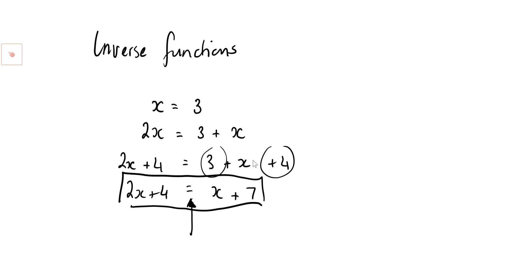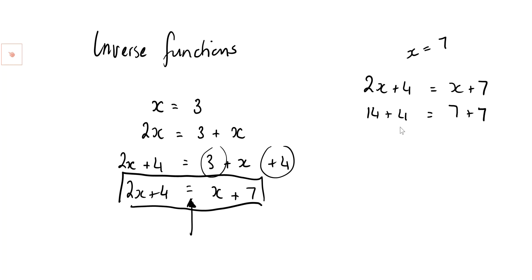I can take this as an equation but stick any value in. If x is 7: 14 plus 4 equals 7 plus 7, which gives 18 equals 14 — but that symbol is now untrue, it's not equal. So when we solve, we are finding x, but more specifically we are finding the value that makes the statement true.